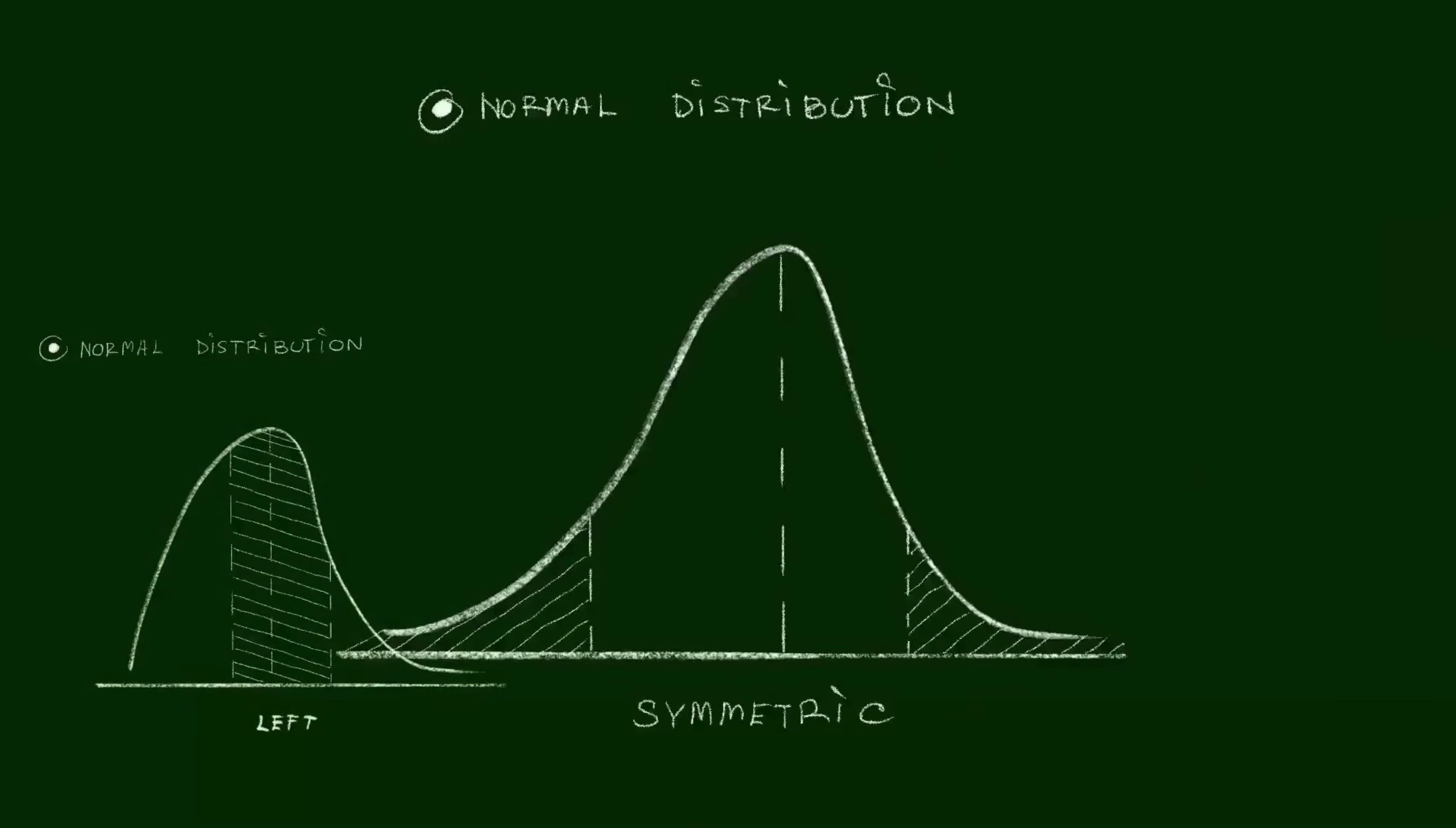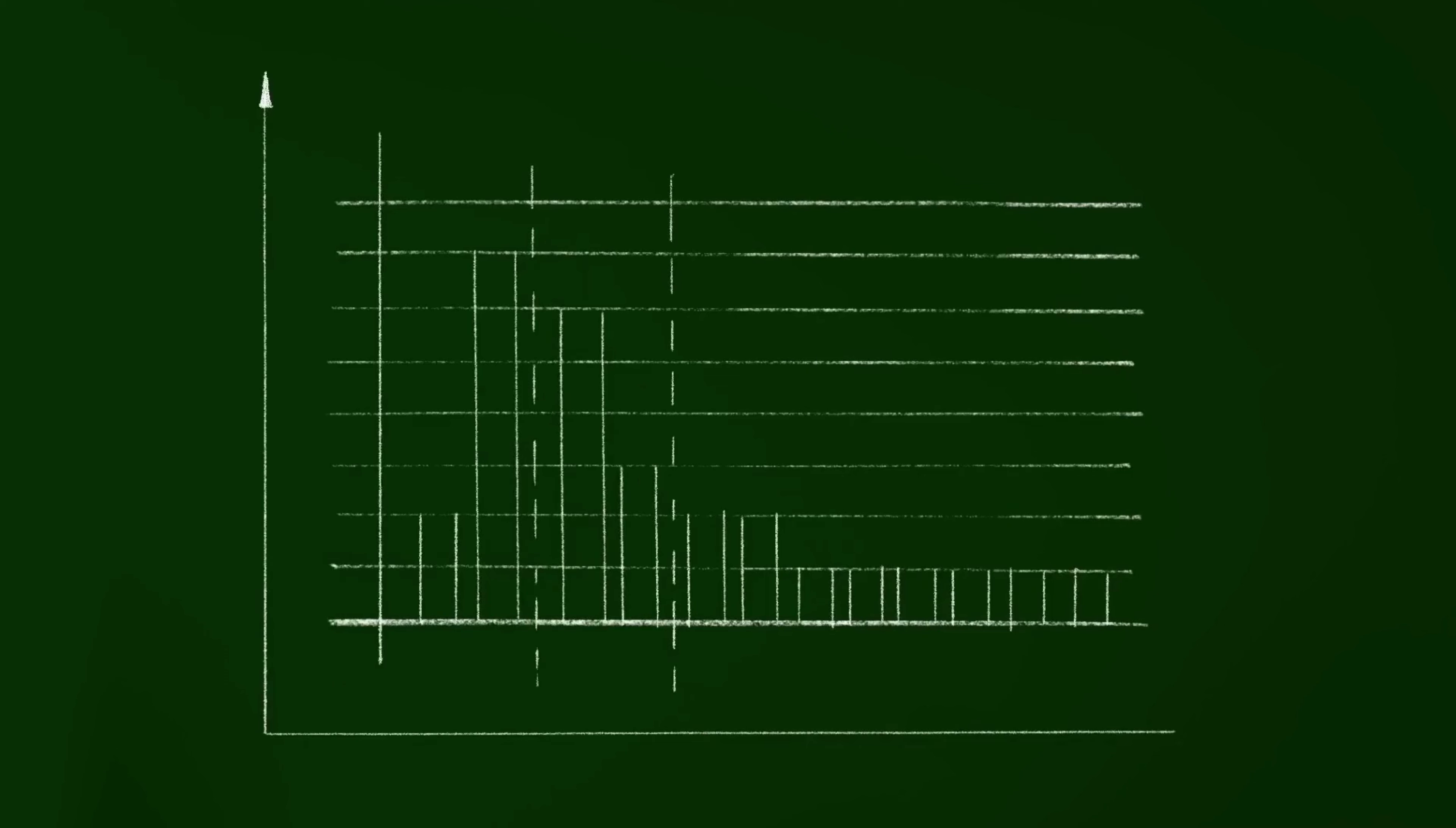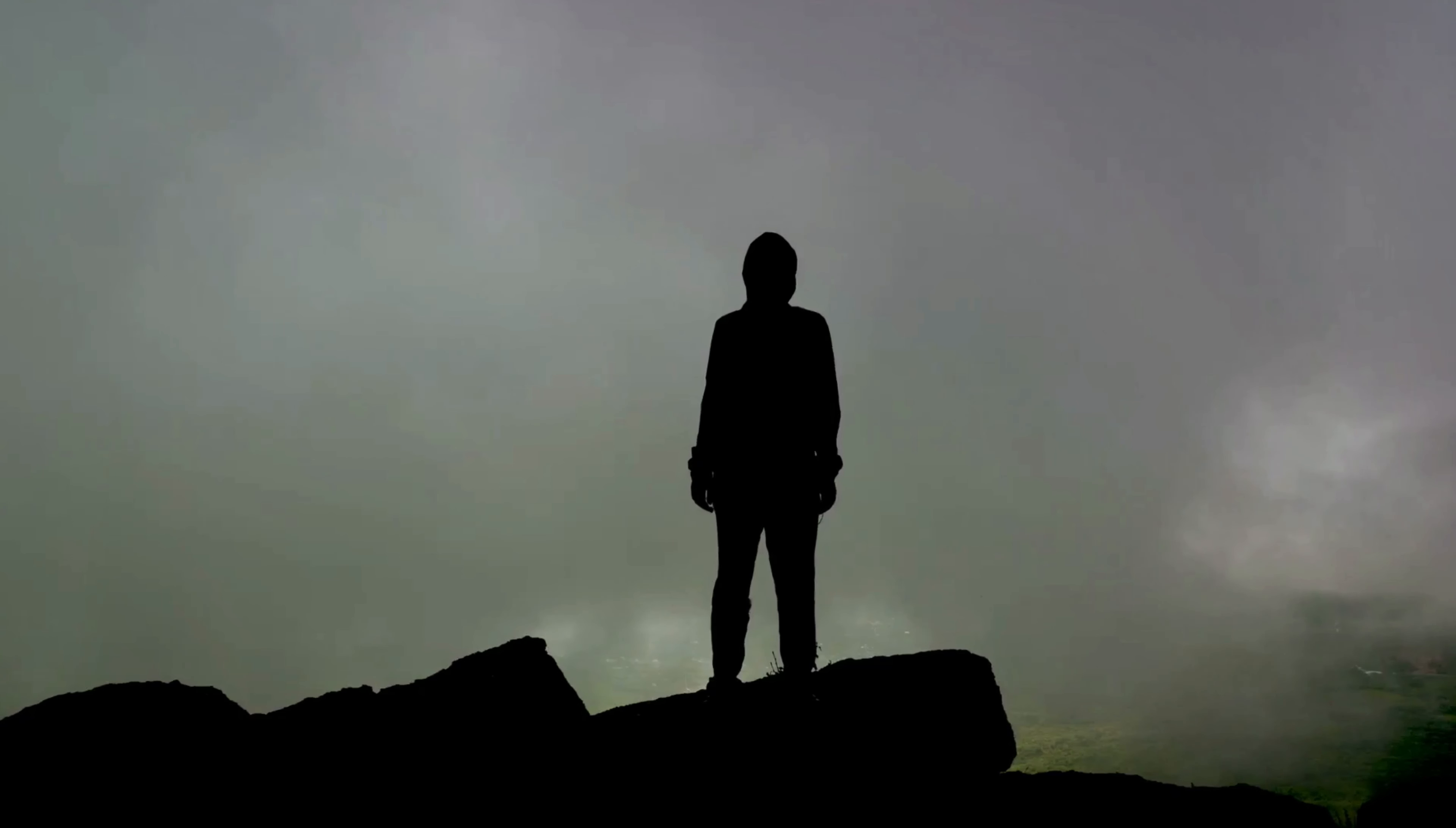In statistics, a sigma, represented by the Greek letter sigma, is a measure of how much individual data points in a distribution deviate from the mean or the average. The more spread out the data, the larger the sigma and vice versa. It's a handy little tool that helps us understand and visualize the distribution of data.